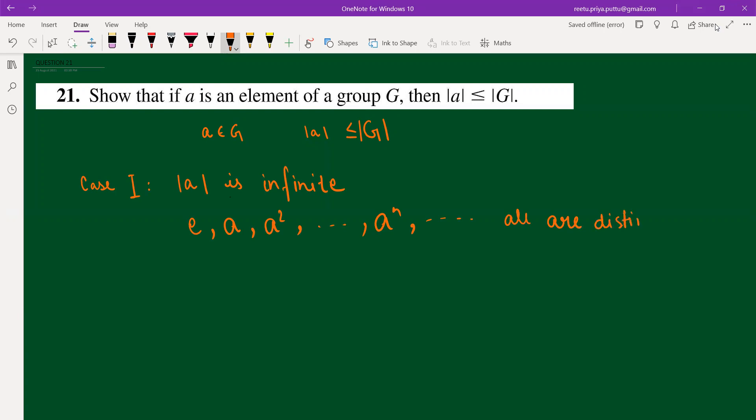Because if this is not the case, then we must have aⁱ which will be equal to aʲ. From here, we can say that aⁱ⁻ʲ equals identity. So from here, I can say that order of A is less than or equal to i minus j.